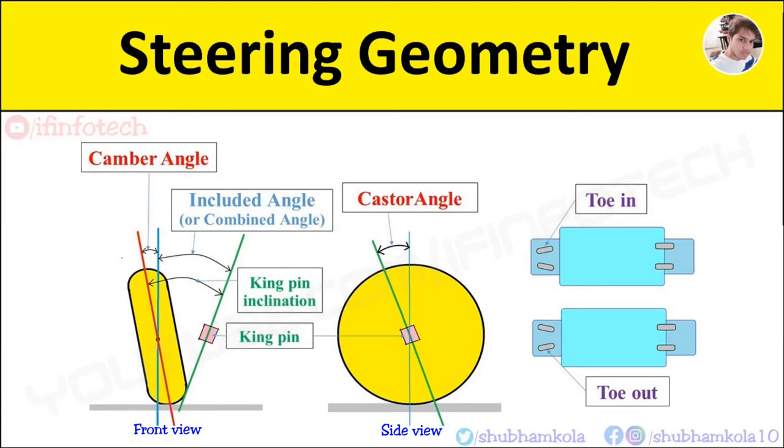Hello everyone, in this video I will show you various angles and terms in steering geometry. So first we understand what is steering geometry. Steering geometry is angular relationship among front wheels, front wheel attaching parts, and vehicle frame.